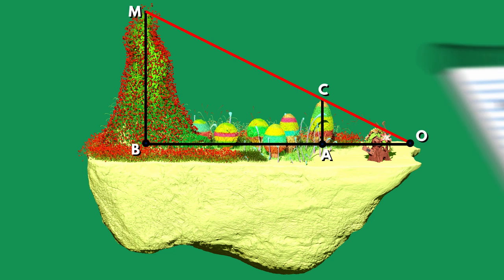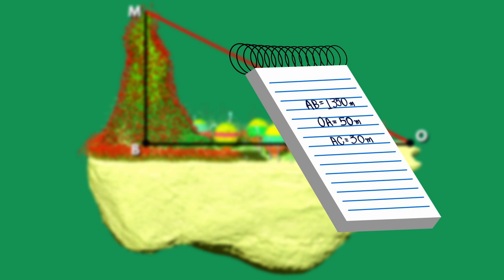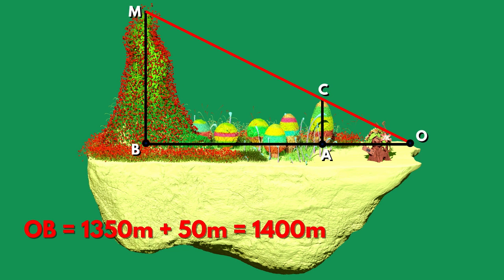They write the following in the notepad. They then calculate OB and they want to find the MB height of the mountain as fast as possible.